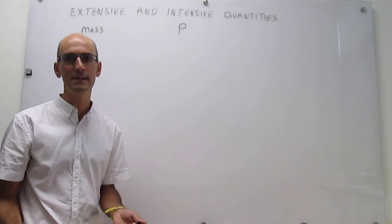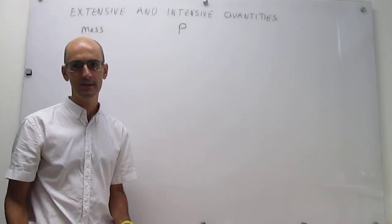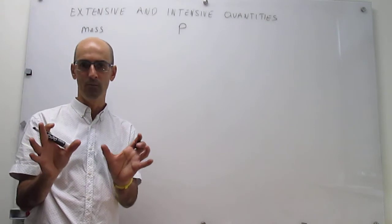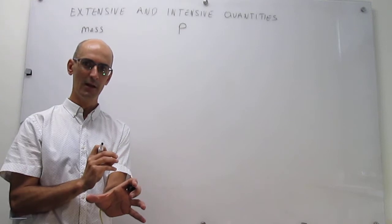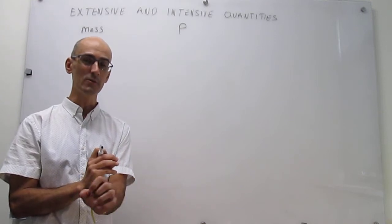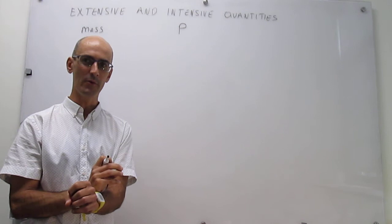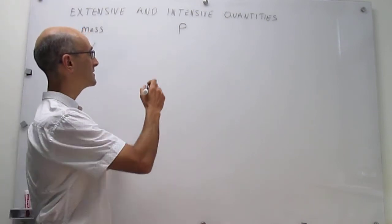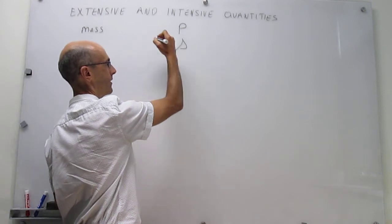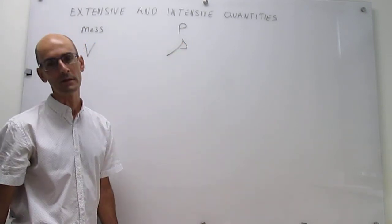We can think about maybe density. So density, think about maybe pure water - two containers of pure water together, lift that wall, and the density is still going to be the same, one gram per cubic centimeter when you get the containers together. So density, which is this cubic letter ρ, is also an intensive quantity.